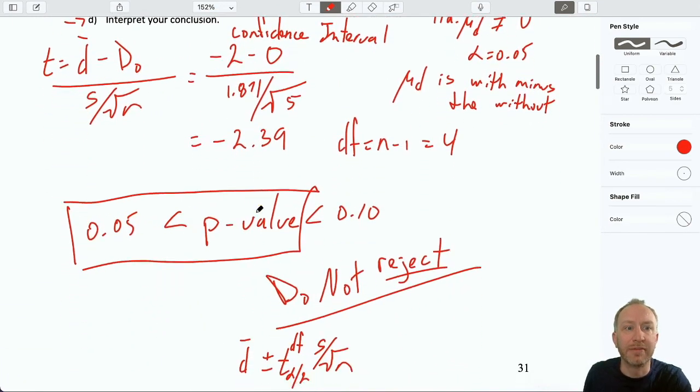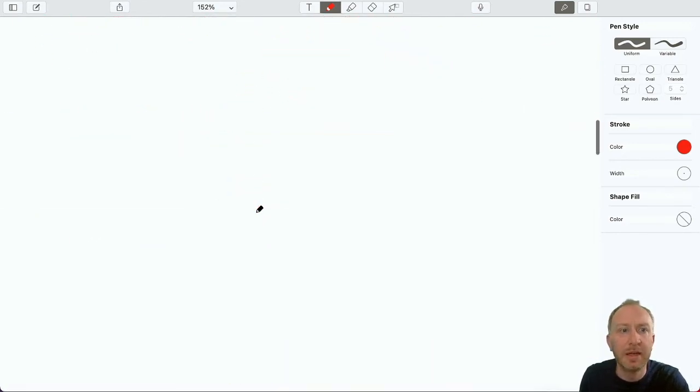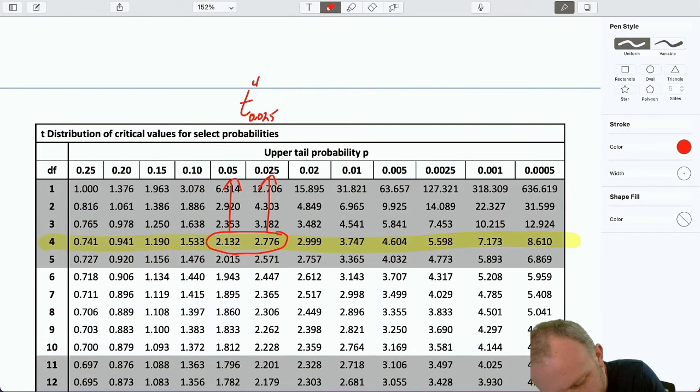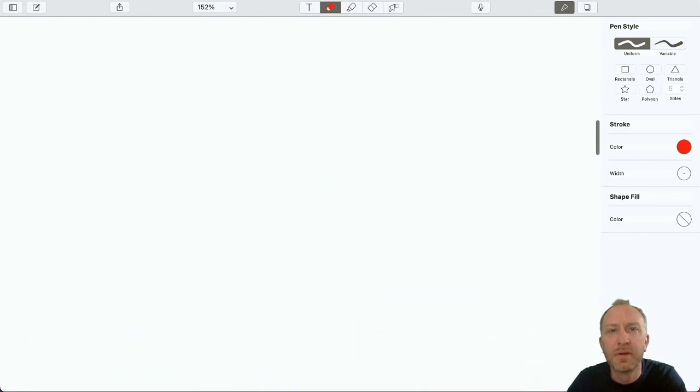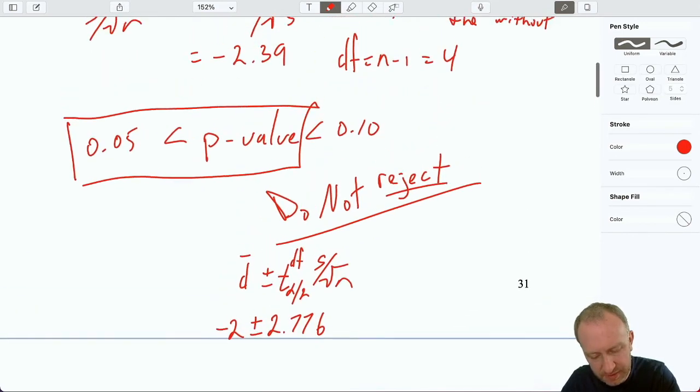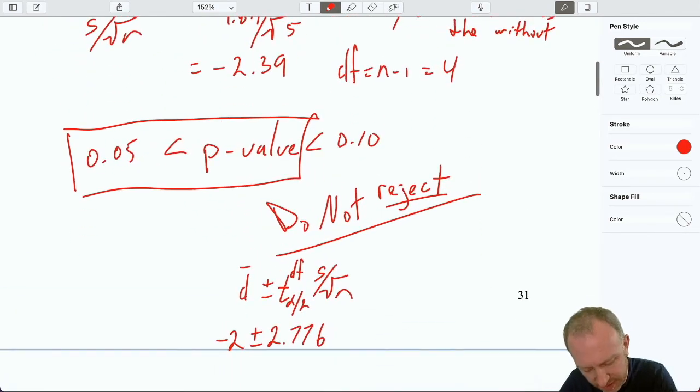Oh, we didn't find a critical value. My mistake. I thought we did. Let's come back down here. Here's our critical value. 4 degrees of freedom. 0.025. There's 0.025. So, our critical value here is 2.776. Plus or minus 2.776. And our standard error. We had this was 1.871 over square root of 5.